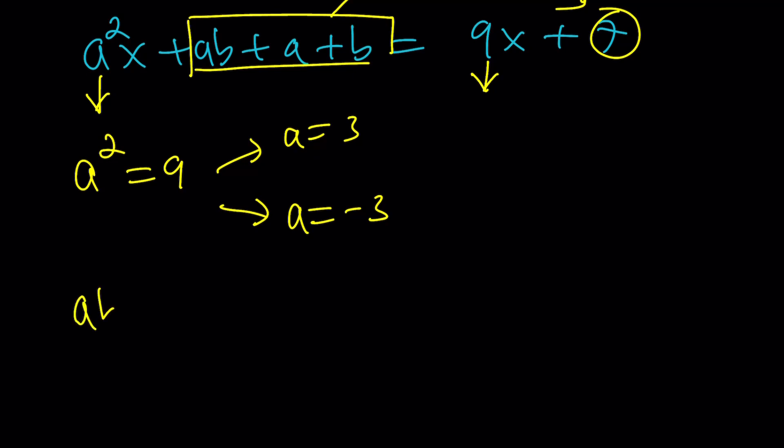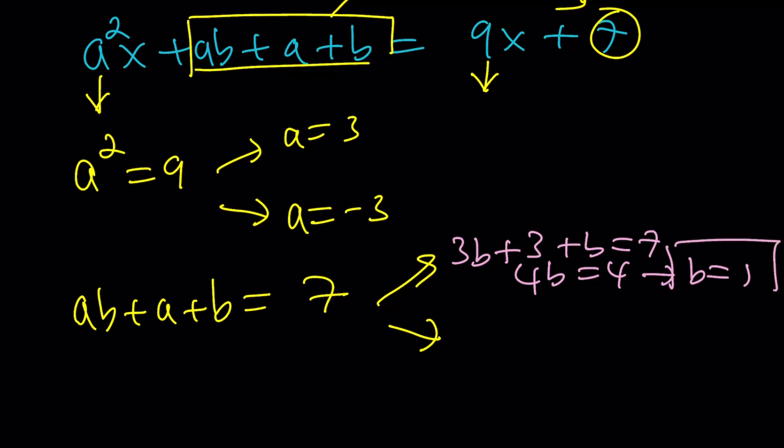Let's go ahead and proceed with the second step, which is setting ab + a + b equal to 7. But we have two solutions from here again, because we have different values of a. If a = 3, we're going to get 3b plus a plus b = 7. This gives us 4b = 4, which ends up with b = 1. So a = 3 gives us b = 1. Let's go ahead and put that on the branch.